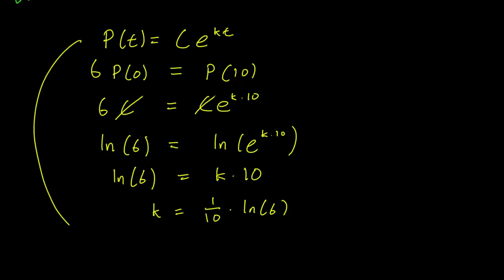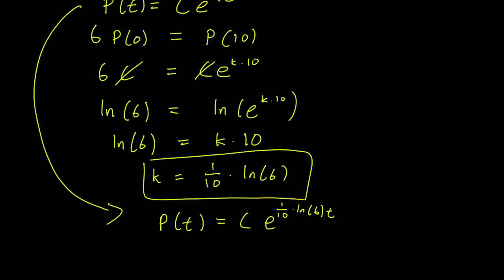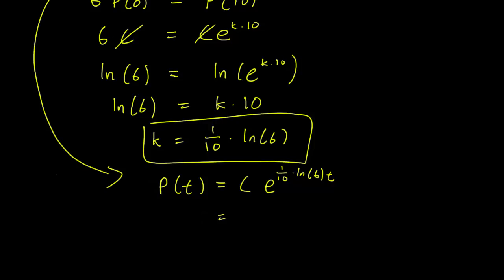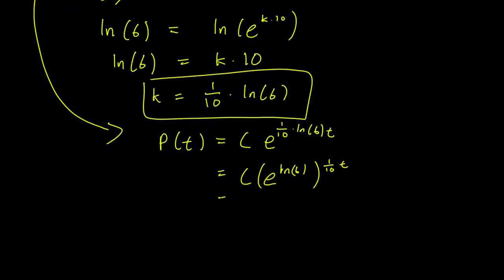So let's write down our equation for P given this new information that we have. We have now that P(t) is equal to C times e raised to the power of 1 tenth times log 6 times t. And one way to rewrite this is we can separate out the log, because exponentials and logs are inverse. So we want to write e raised to the power of log 6 raised to the power of 1 tenth t. So what we have now is C times 6 to the 1 tenth t. And this is our new expression for the population.